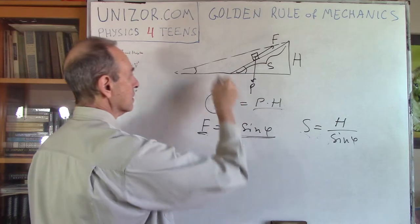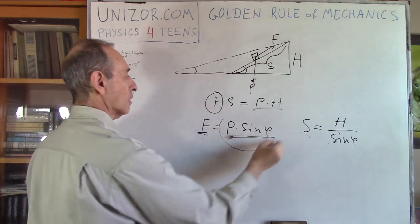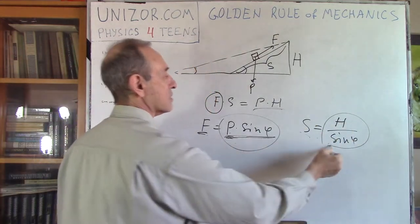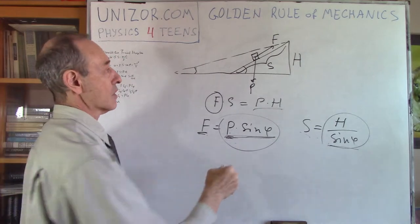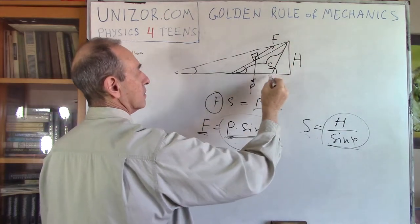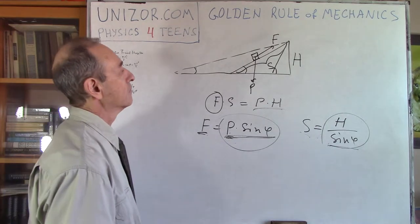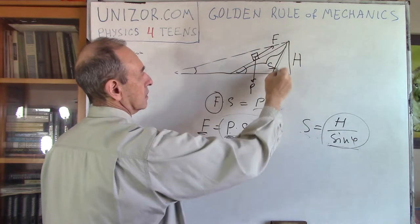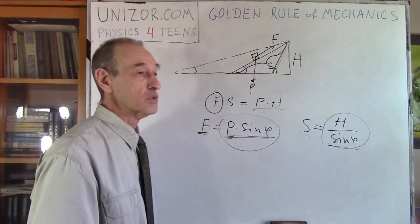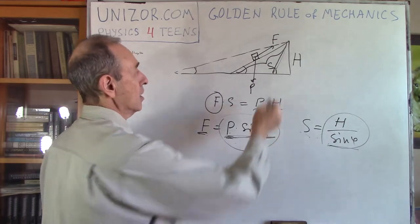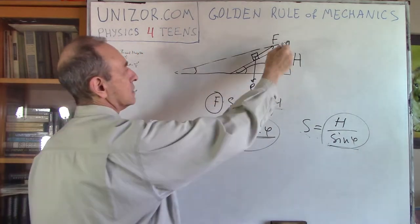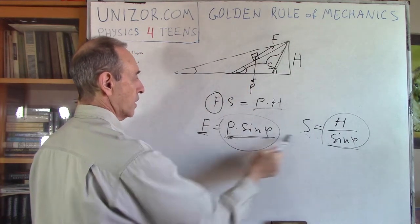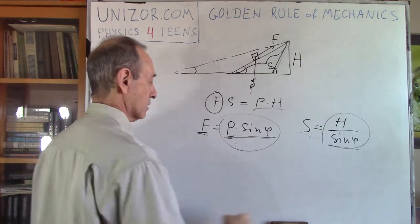So you are decreasing the angle and you win in force because you apply smaller force, but you lose in distance because the distance is longer. And vice versa — if you want to apply bigger force, you lose in effort but win in distance because the steeper path is shorter. Again, win in one, lose in the other — the same golden rule.